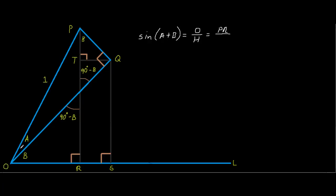And we can see that the hypotenuse of this triangle is 1, so we're going to put 1 here. So we know that sin(A+B) equals PR. So we know the first part of the equation.